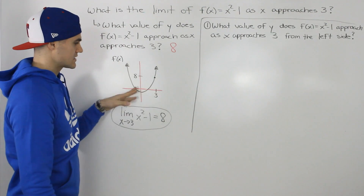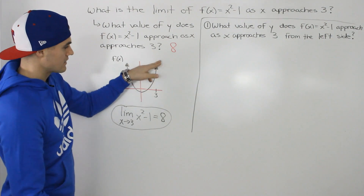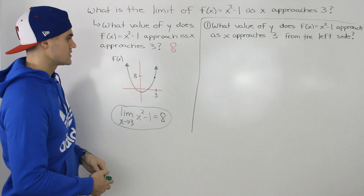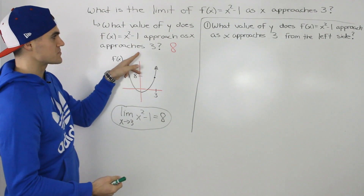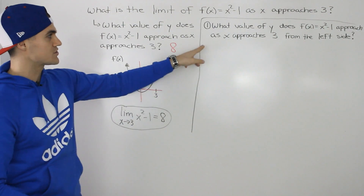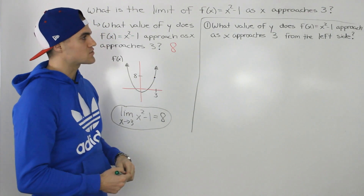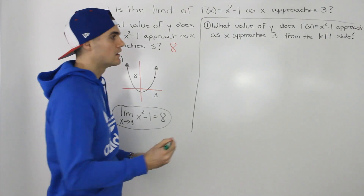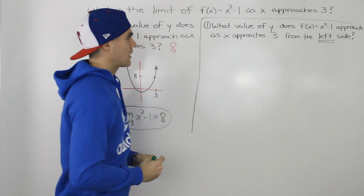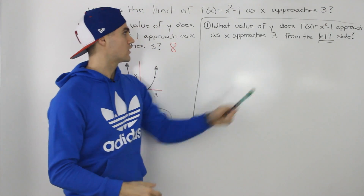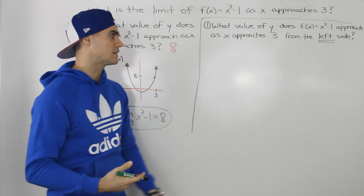I mentioned that we can approach this x value of three from either the left side or from the right side. So would anything change if we got a more specific question dealing with an actual side? For example, what value of y does f of x equals x squared minus one approach as x approaches three from the left side? Notice how we're getting a little bit more specific here — we're not just generally saying as we approach three, we're saying specifically from the left side.